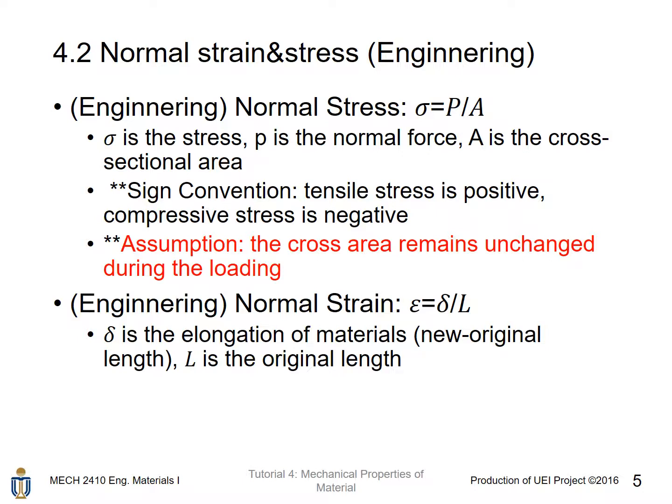In the engineering definition of normal stress, it is defined as sigma, where sigma stands for stress. P is the symbol for normal force, and A is the cross-sectional area, which we assume does not change with respect to time. For tensile stress it is positive, and for compressive stress it is negative. The assumption is that the cross-sectional area is constant during loading.